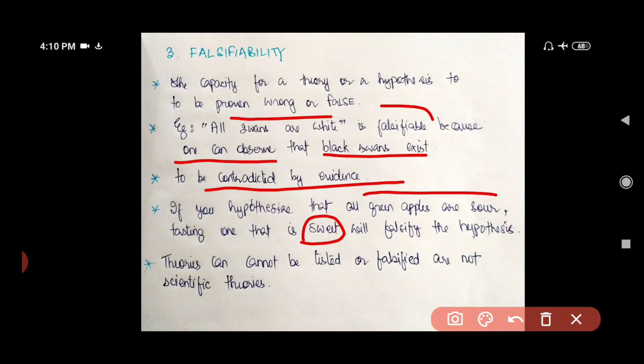Let us say you claim that green apples are sour. But I bring you an apple which is green in color and it is sweet. So I'm presenting to you the evidence that your hypothesis is wrong and the evidence is in my hand. There are green apples which are sweet. So theories that cannot be tested or falsified are not scientific theories.